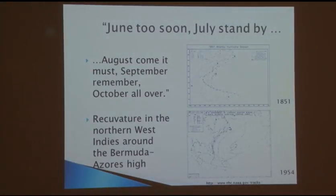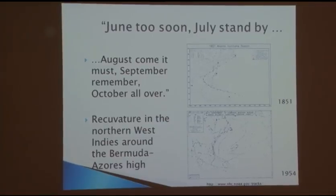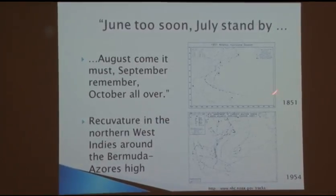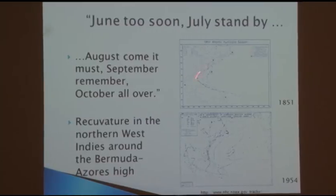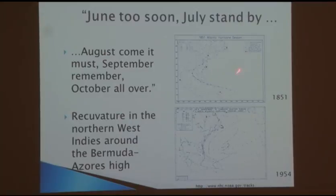I grew up in Trinidad, which is in the Caribbean, and every Caribbean child knows the saying: 'June too soon, July stand by, August come it must, September remember, October all over.' That essentially tells you the length of the hurricane season. You also grow up knowing that hurricanes recurve around the high pressure system in the Atlantic and swing back in a northeasterly direction — that's the typical track.